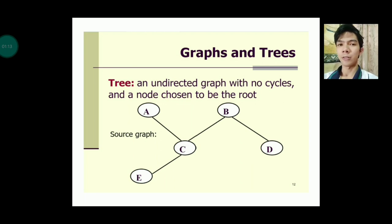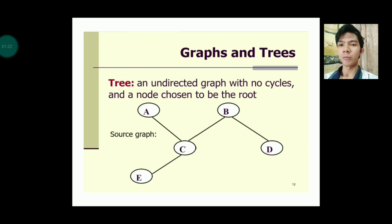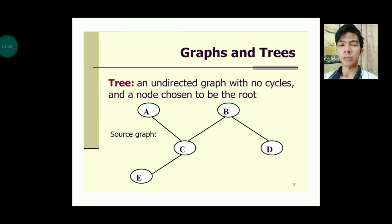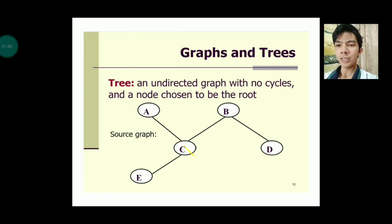A tree is an undirected graph with no cycles, with a node chosen to be the root. Unlike graphs where vertices can be repeatedly connected in cycles, in a tree there is no cycle. An example of tree edges is: a-c, c-e, c-d, and b-d.